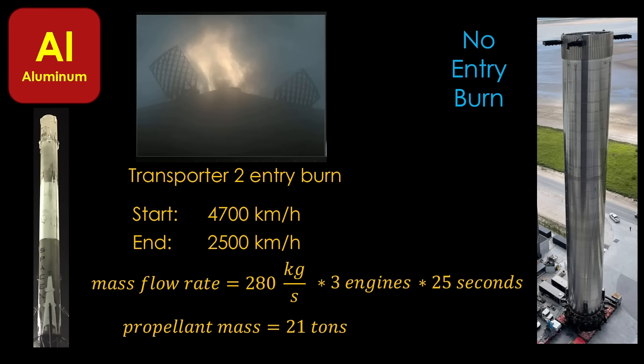If we scale that up to Super Heavy masses, it's going to be a lot of extra propellant, and my guess is that the extra propellant masses as much as the mass savings you would get with the lighter structure of aluminum, so aluminum is also unexciting for Super Heavy.